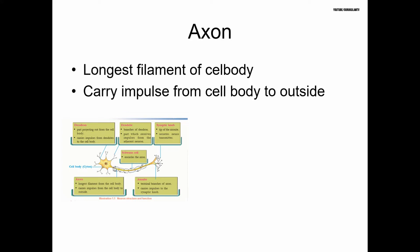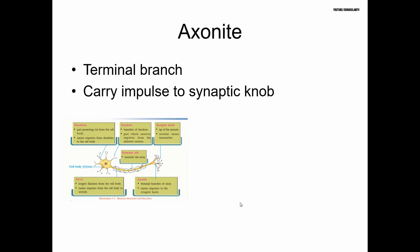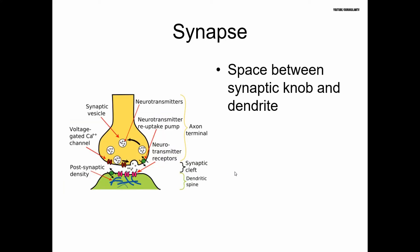The axon is the longest filament of the neuron. The axon terminates at the synapse. The synaptic node is a gap between the axon terminal of one neuron and the dendrite of the next.